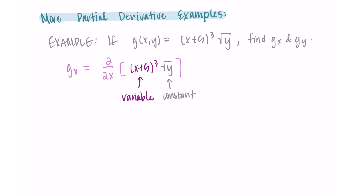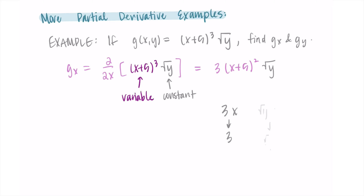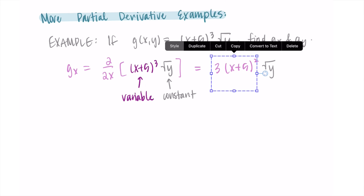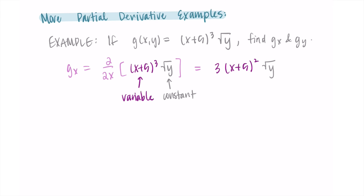The x plus 5 cubed is what we're going to take the derivative of because that's our variable. When we take the derivative, the 3 comes in front, then we decrease the power by 1. We technically take the derivative of the inside — that's the derivative of x plus 5 — but that's just 1, so it doesn't really do anything. The constant sticks around, so the result is 3 times x plus 5 quantity squared times the square root of y.